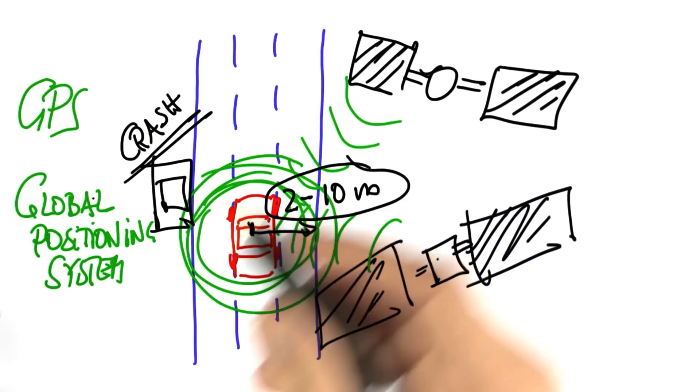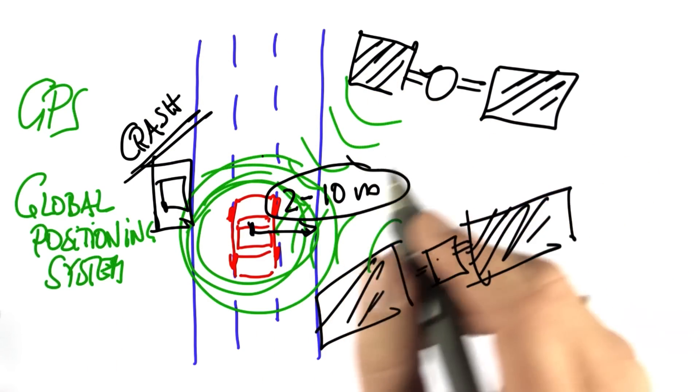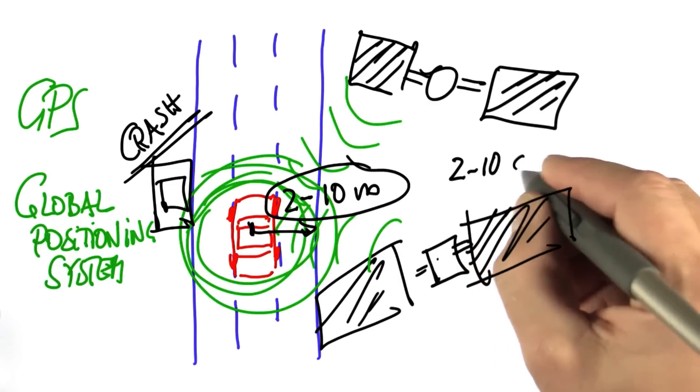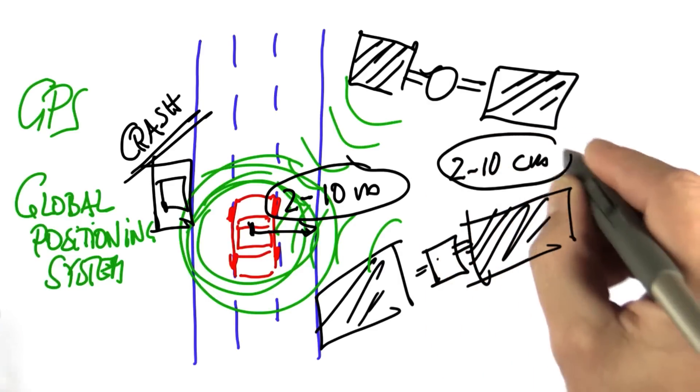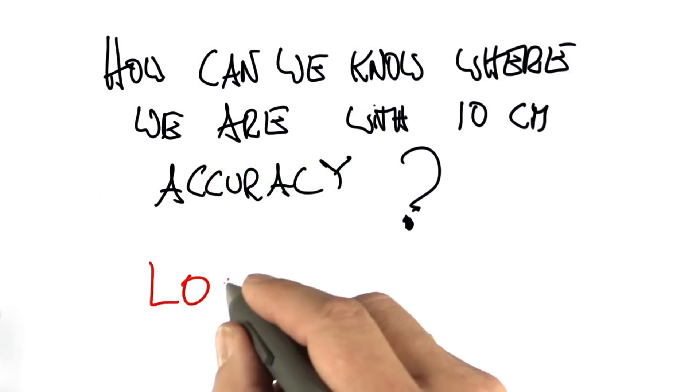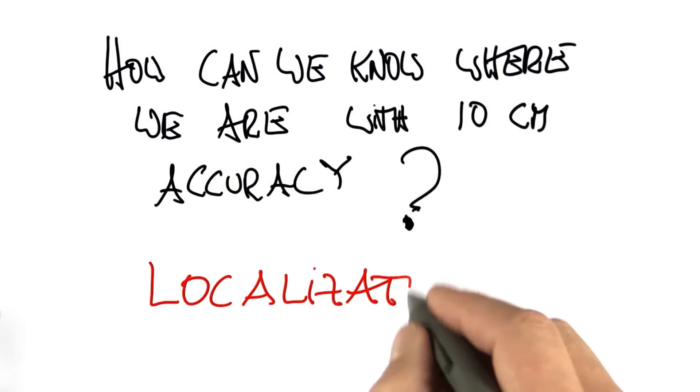So for our self-driving cars to be able to stay in lanes using localization, we need something like 2 to 10 centimeters of error, and then we can drive in lanes. So the question is, how can we know where we are with 10 centimeter accuracy? That's the localization question.